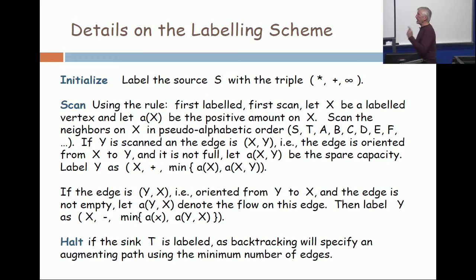The triple is (X, +, quantity). Why putting X? That tells me that the label on Y came from X. The plus tells me that I got it by going in the forward direction. The quantity is: what amount could I get to X, and what's the spare capacity across? I take the minimum of those, and that's the amount that I put as the third component of the triple.